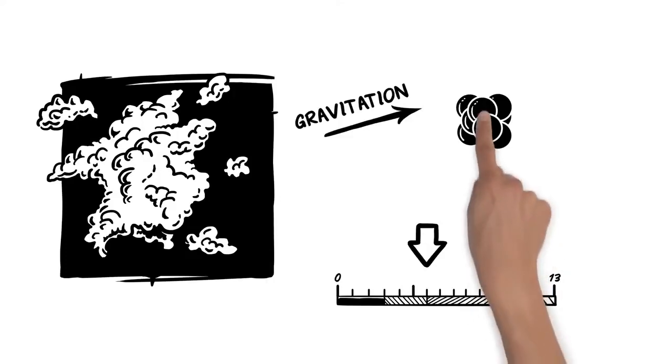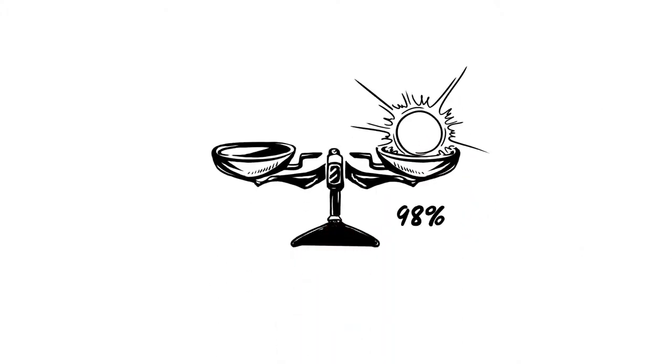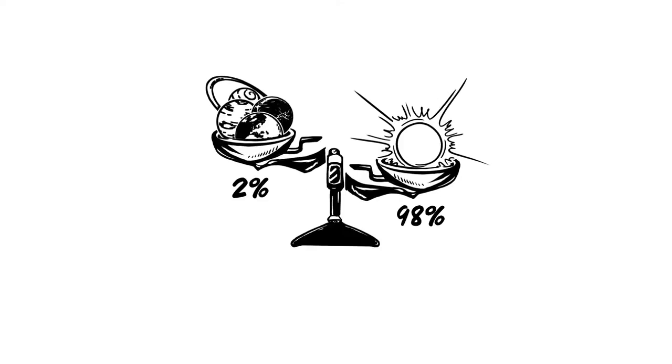Most of the matter accumulated in one place. A very big, hot ball, which makes up for an impressive 98% of all the matter in the solar system. The sun.